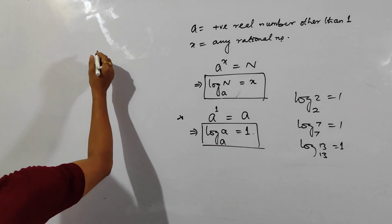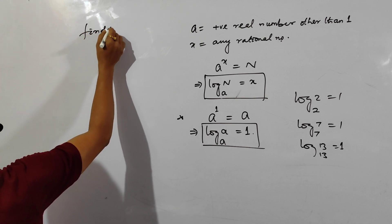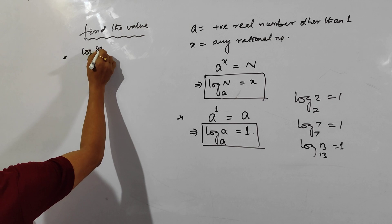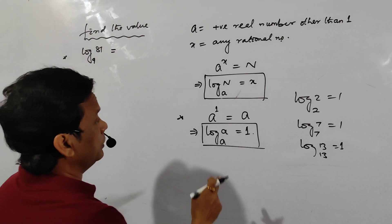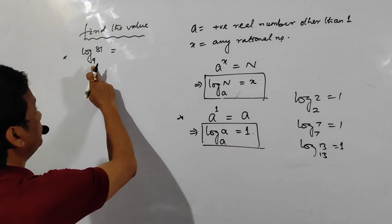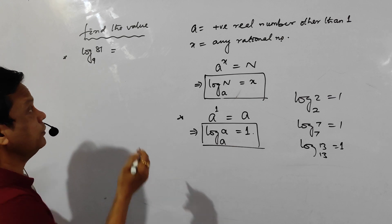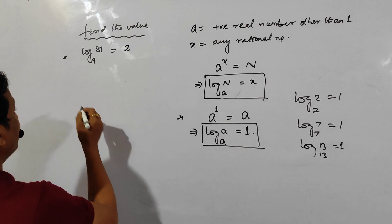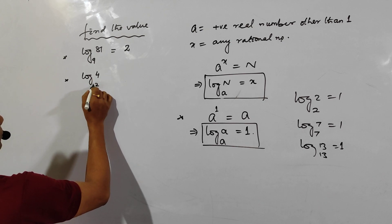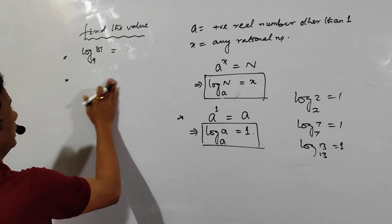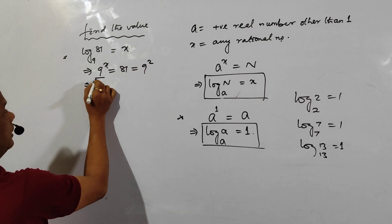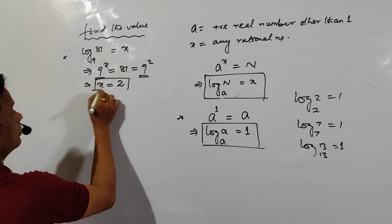Now let us find values using the definition. First question: log of 81 to the base 9. Let it be x; then 9^x = 81. Since 9 squared is 81, we get x = 2. Second question: log of 4 to the base √2. Let it be x; then (√2)^x = 4. Since √2 = 2^(1/2), we get 2^(x/2) = 2^2, so x/2 = 2, meaning x = 4.